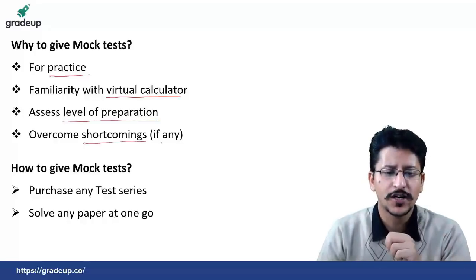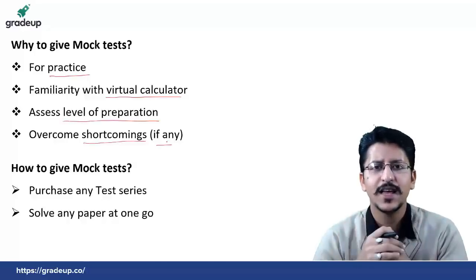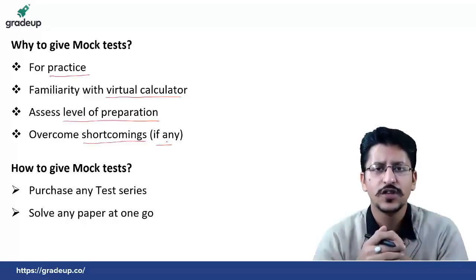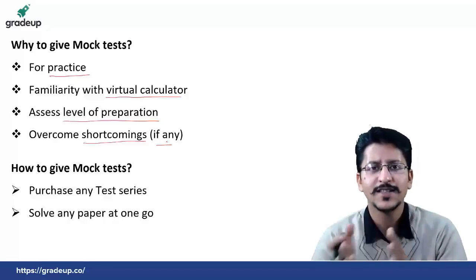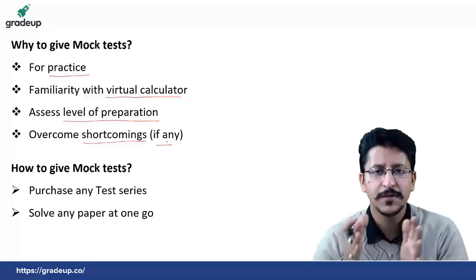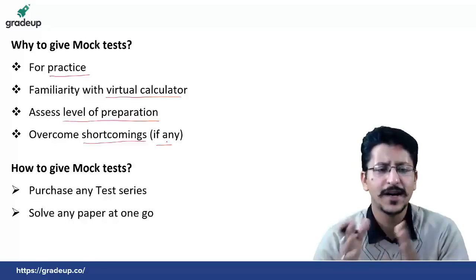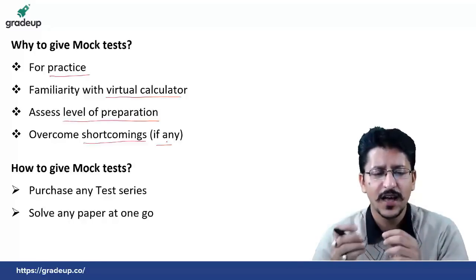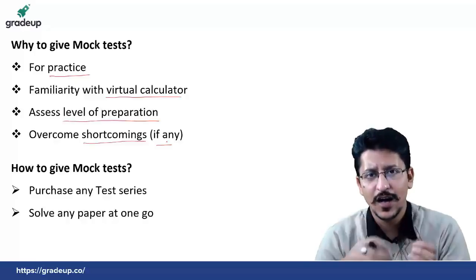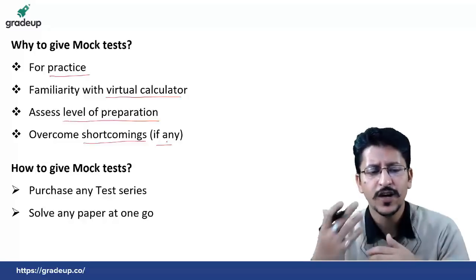Doosri cheez hai: overcome the shortcomings. Shortcomings kis tarike se ho sakti hain — jaise maan lijiye aap mock test solve kar rahe hain, to aap dekh sakte hain ki kis tarike ki shortcomings saamne aa rahi hain. Jaise yeh ho sakta hai ki aap kabhi poore 65 questions ko attempt hi nahi kar pa rahe, aapka time shortage ho raha hai — to waahan se aap apna time manage karna seekh sakte hain. Questions ek baar padhne par nahi samajh mein aa raha hai, to aage badh jaiye, uspe zyada time waste mat kariye. Yeh saari cheezein practice se aayengi. Pehle test mein jo shortcomings lagti hain, unko agle test mein improve karne ki koshish kijiye, aur step by step, mock test by mock test, in cheezon ko improve karte chale jaiye.